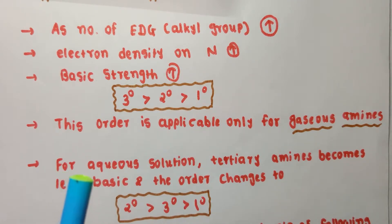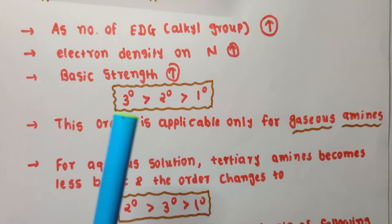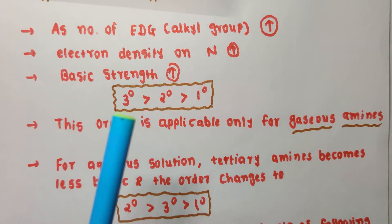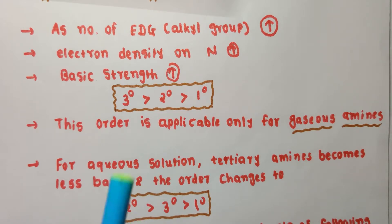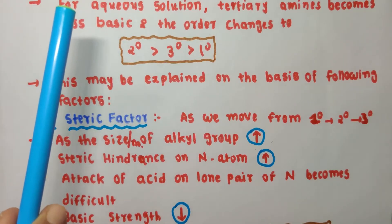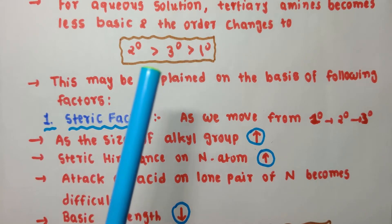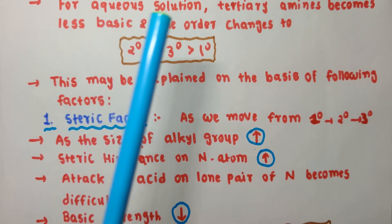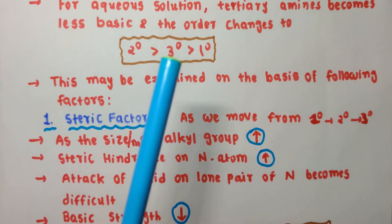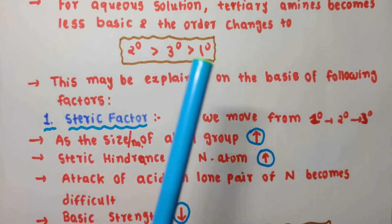However, this order — tertiary > secondary > primary — is only valid for amines in the gaseous state. If the amines are in aqueous solution, this order changes. In aqueous solution, secondary amines are the most basic, followed by primary amines, and then tertiary amines. So you need to remember both orders: one for gaseous amines and one for aqueous solution.